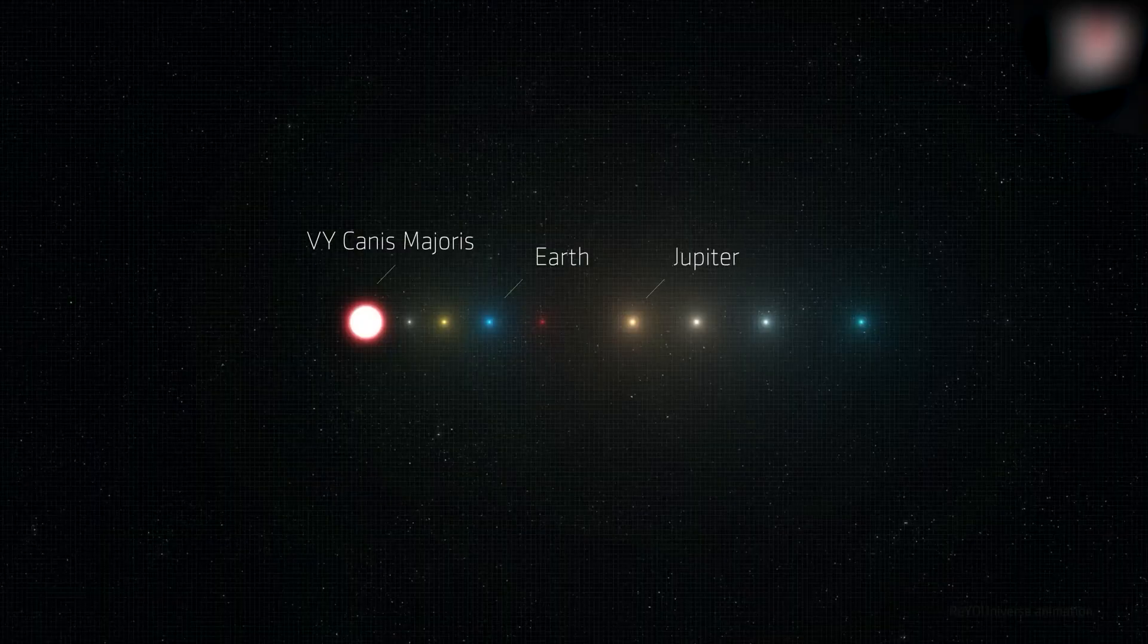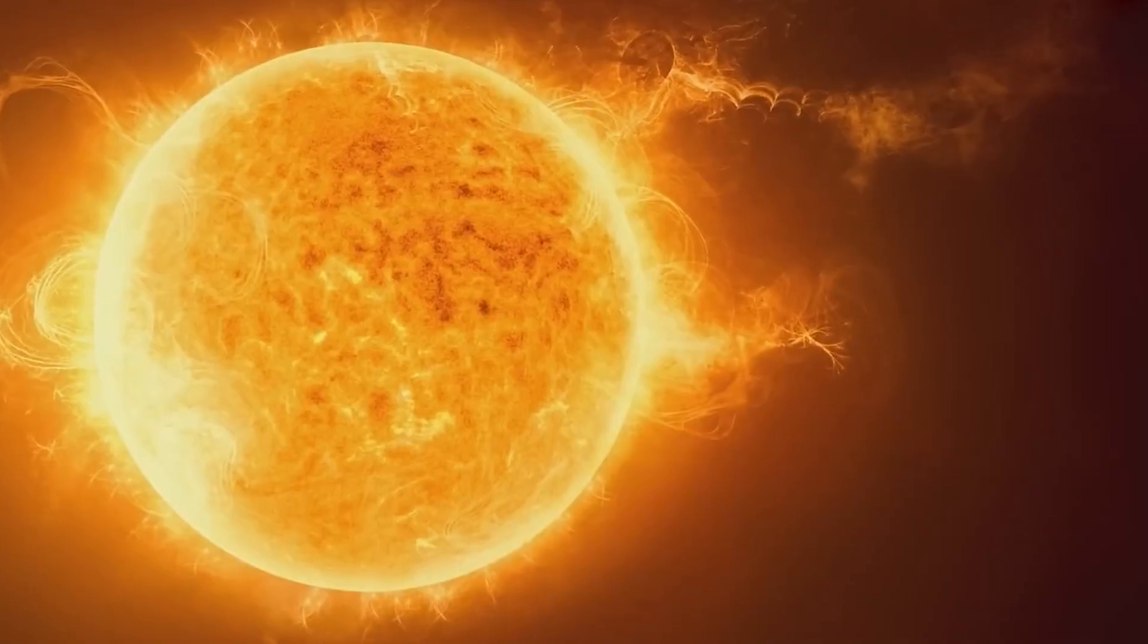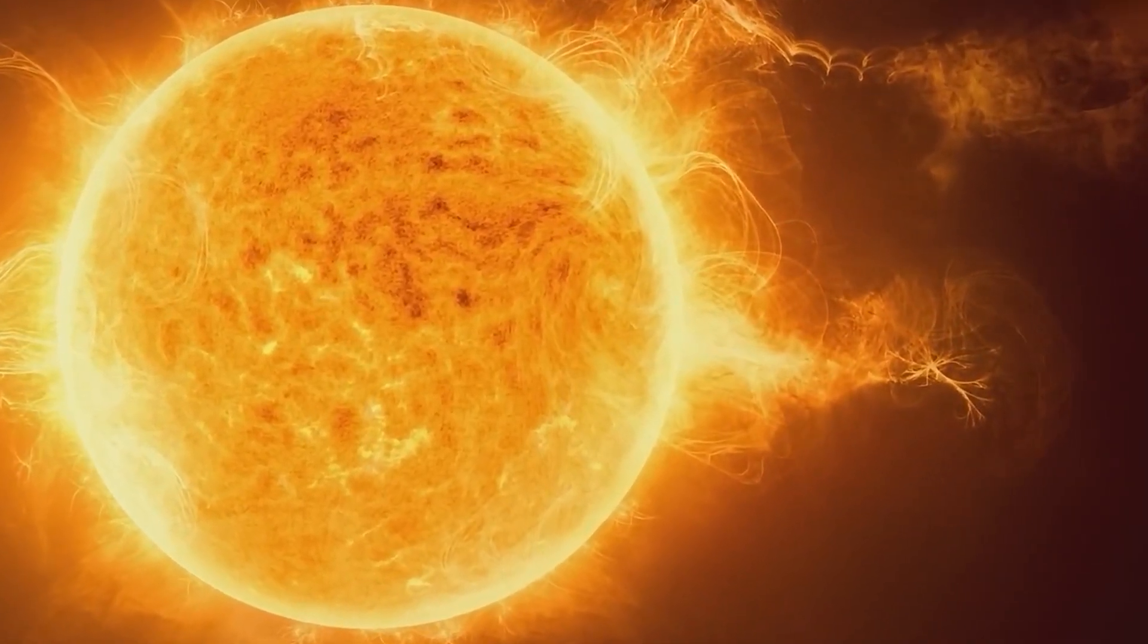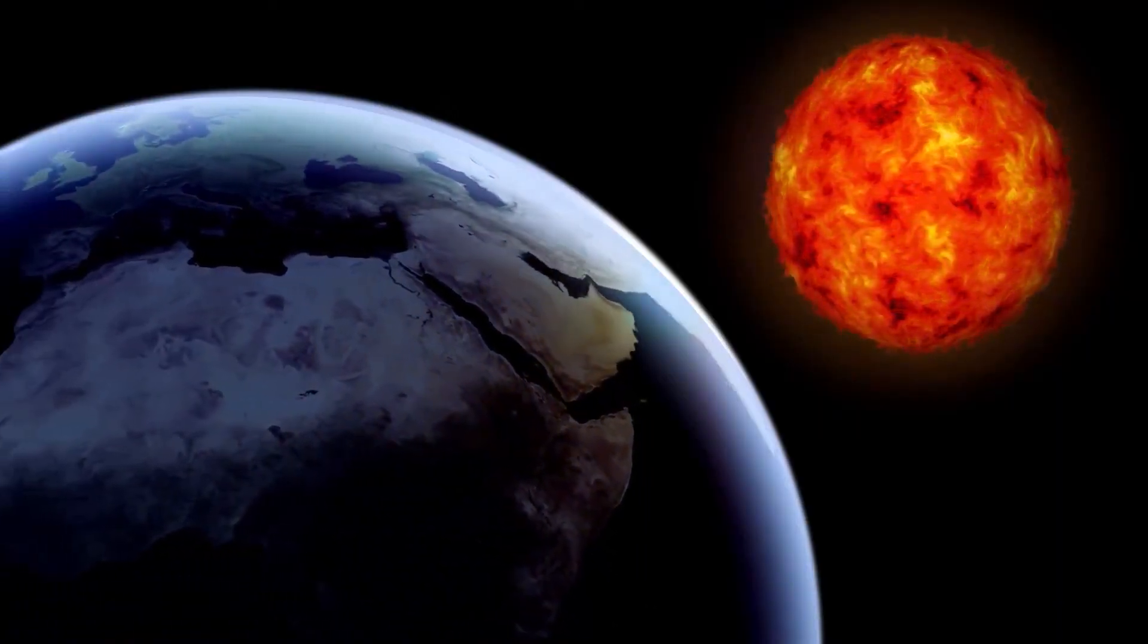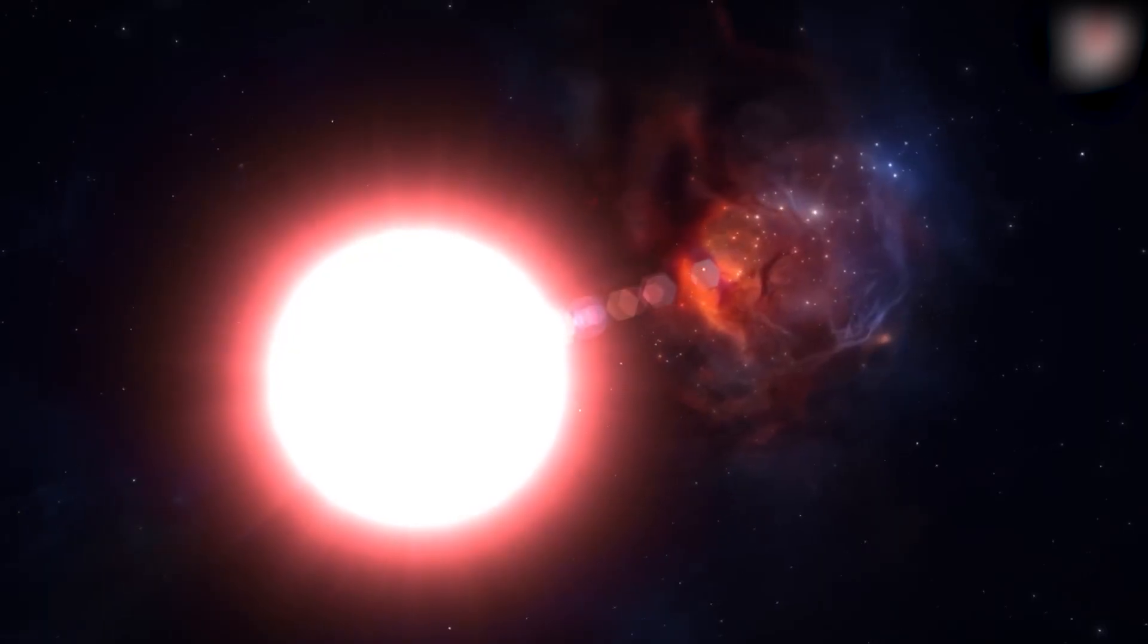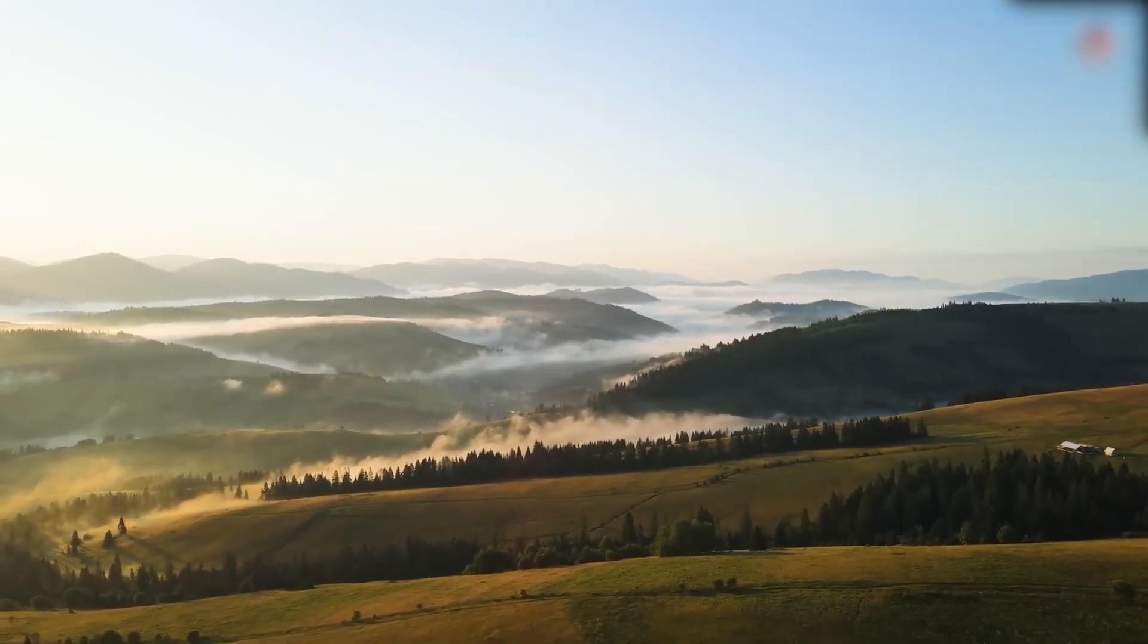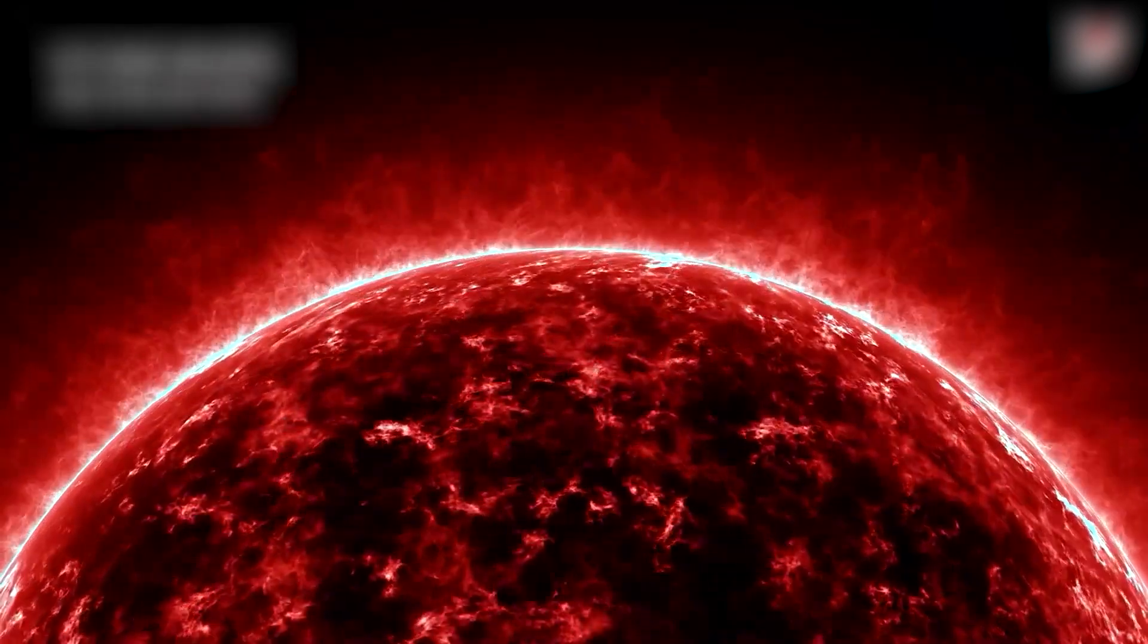This might seem unimaginable and quite absurd. Well, here's why: VY Canis Majoris has an average density between 5.33 to 8.38 milligrams per cubic meter. When it comes to the density of planet Earth at sea level, it is about 1.2 kilograms per cubic meter. The density of this hypergiant star is about 100,000 times lower than the density of Earth's atmosphere at sea level.